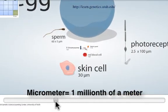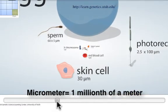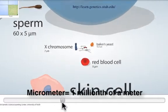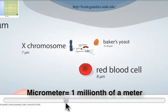Here we go. Skin cell, thirty micrometers across. Blood cell, even smaller still, eight micrometers across.